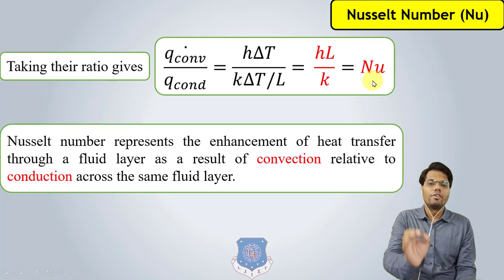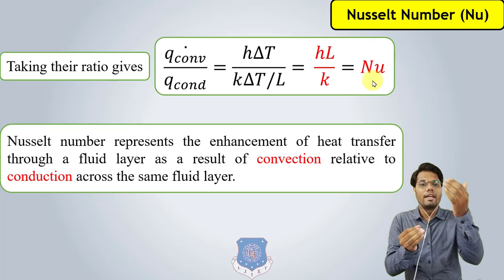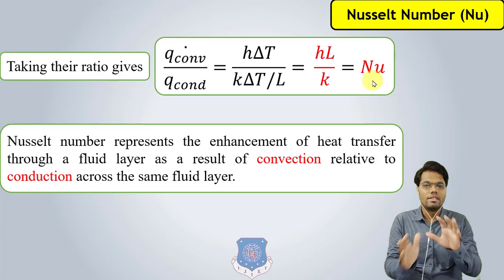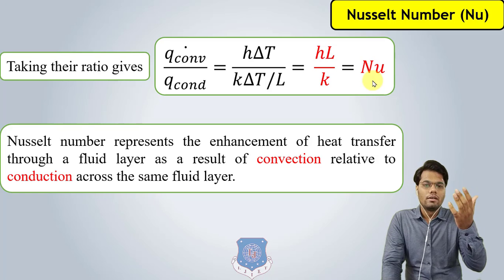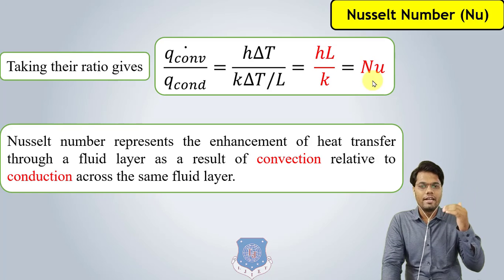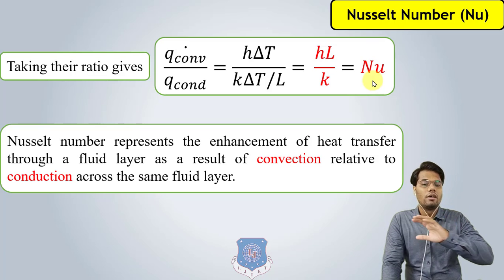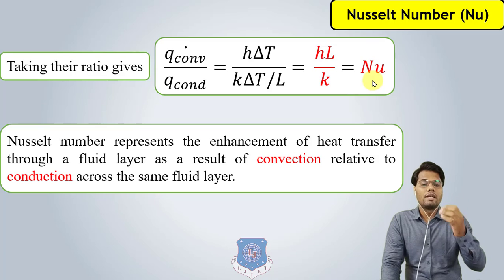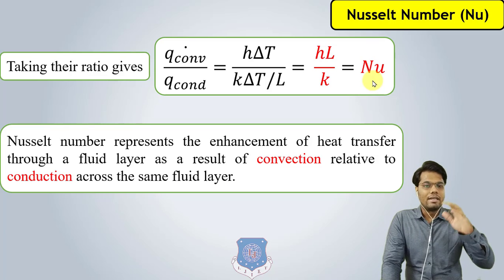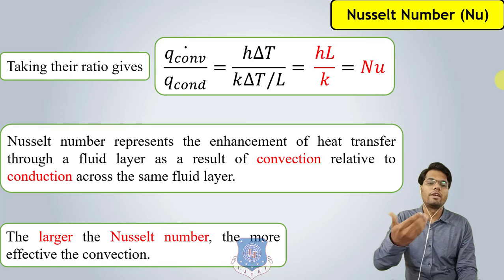The Nusselt number represents the enhancement of heat transfer through a fluid layer as a result of convection relative to conduction. If the value of the Nusselt number is 1, it shows that whatever heat transfer takes place is done by conduction mode, meaning there is no relative motion of the fluid. The higher the Nusselt number, the more heat transfer occurs by convection. So a larger Nusselt number means more effective convection.